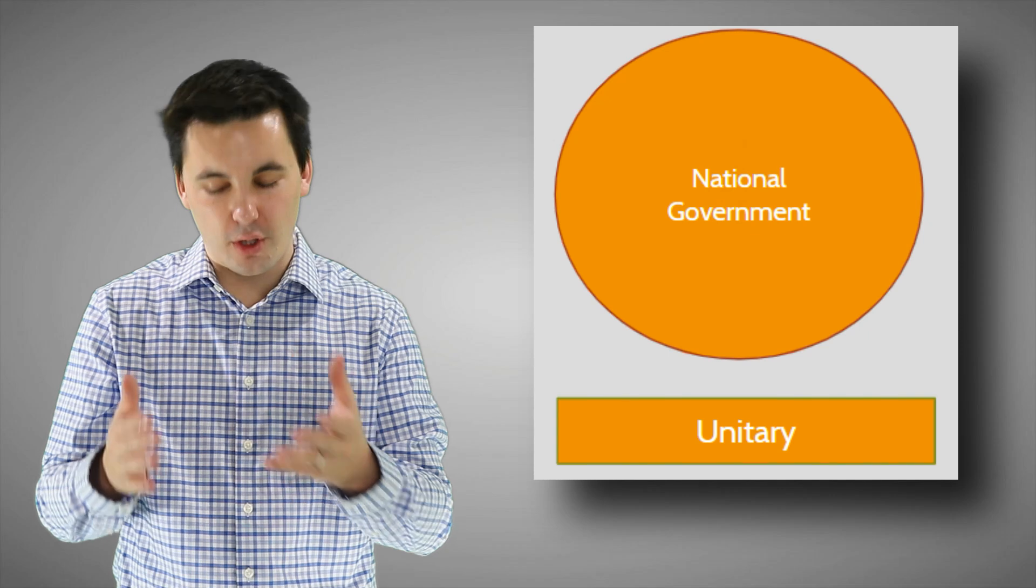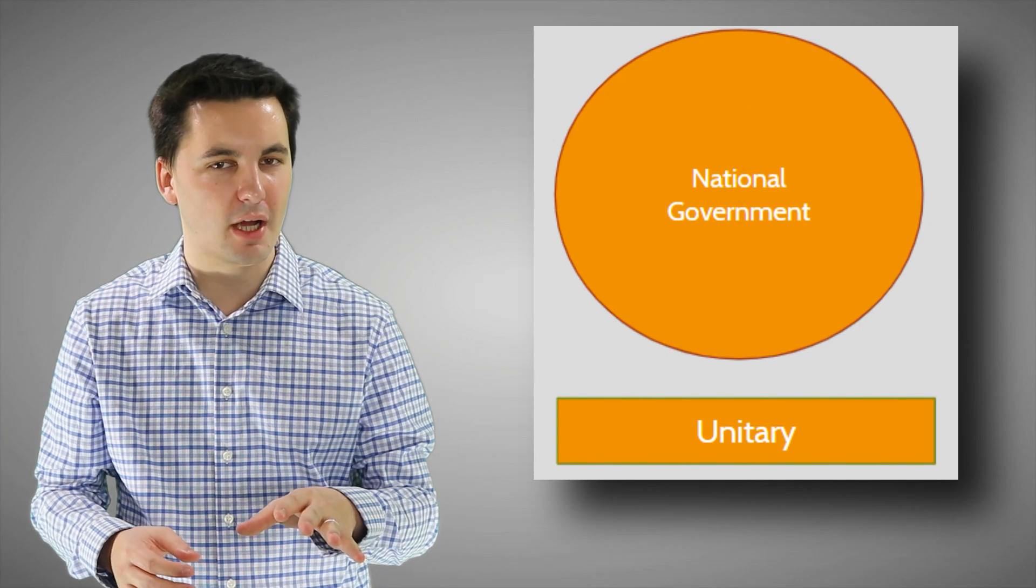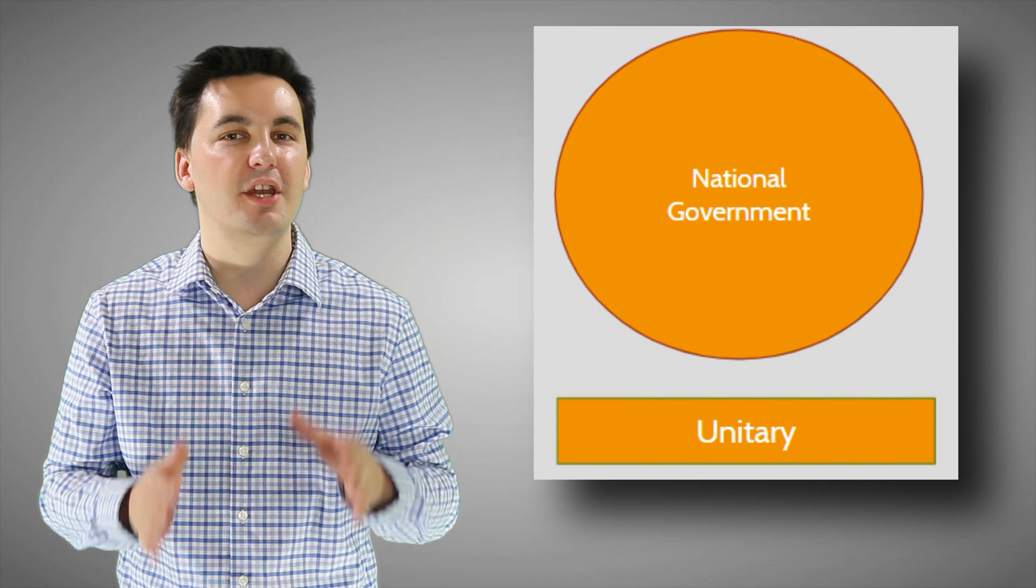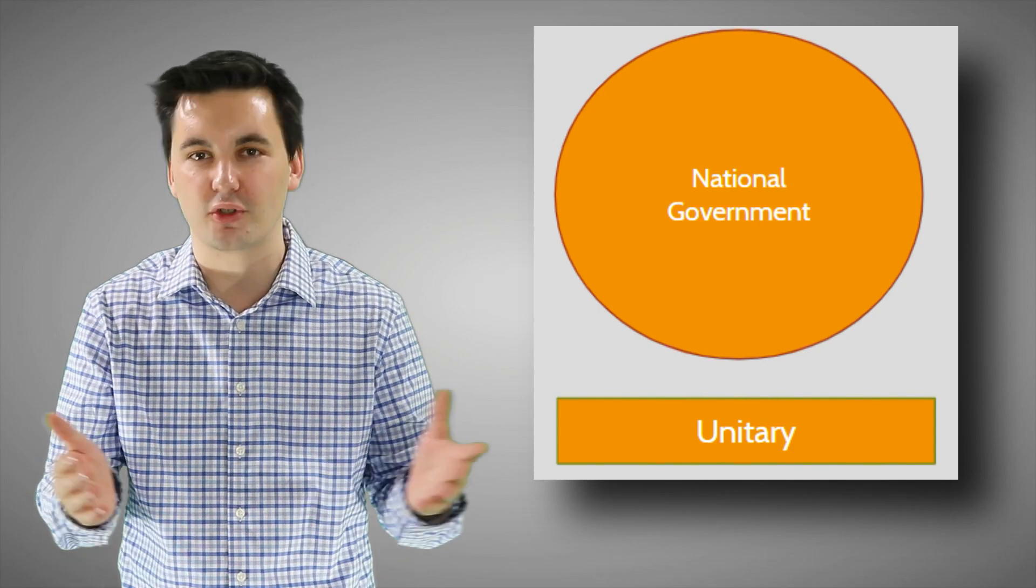We can see that some states concentrate their power at the national level, while other states decide to share that power with the national government and also regional government. States that have the power concentrated at the national level are unitary states. Here the regional governments have little to no power. The national government is what's going to set the laws and the policies and the systems for society.